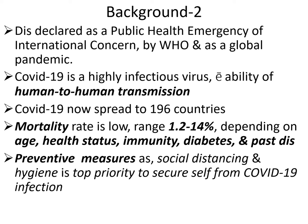COVID-19 has spread to 196 countries when this lecture was written. Mortality rate ranges from 1.2% to 14% depending on age, health status, immunity, diabetes, and past disease. Preventive measures such as social distancing and hygiene are the top priority to protect oneself from COVID-19 infection.